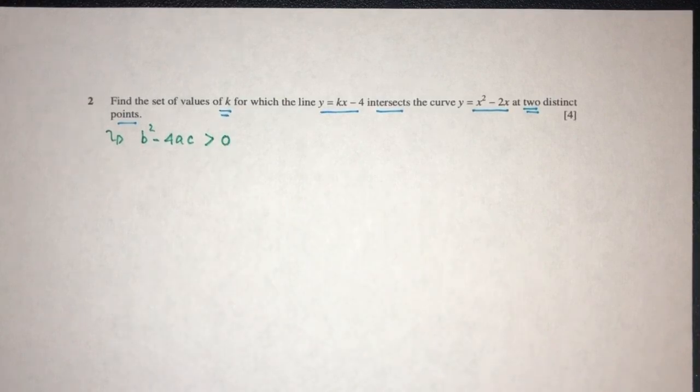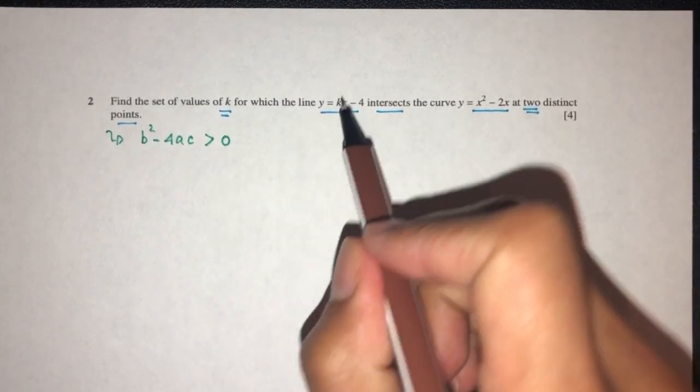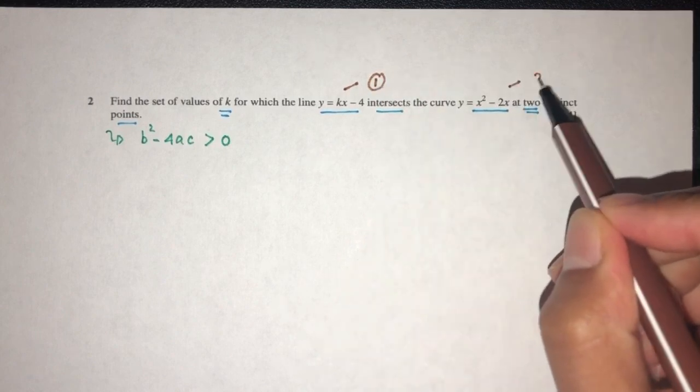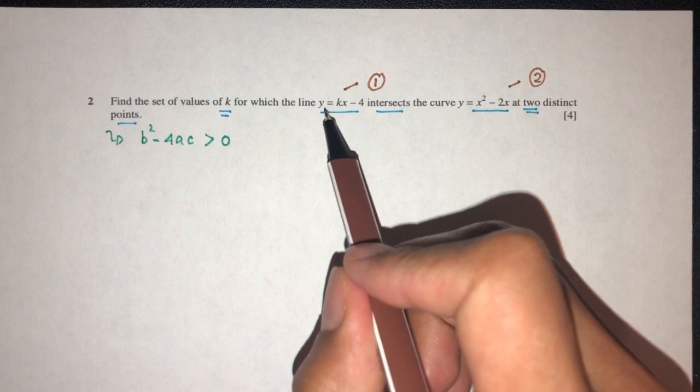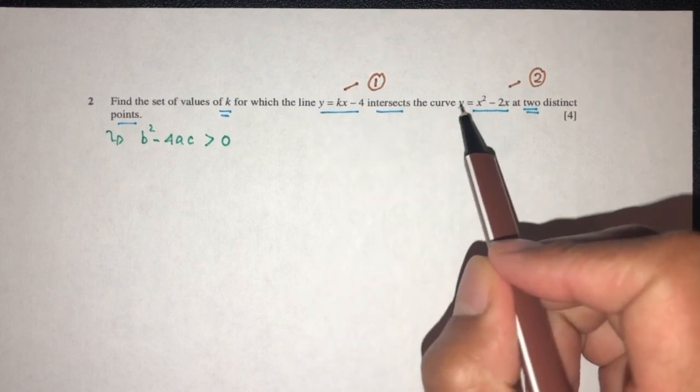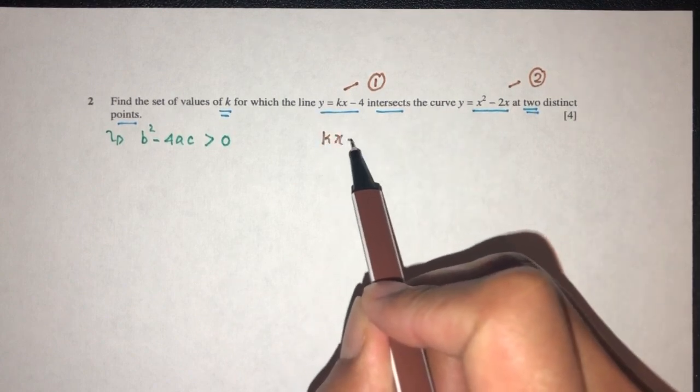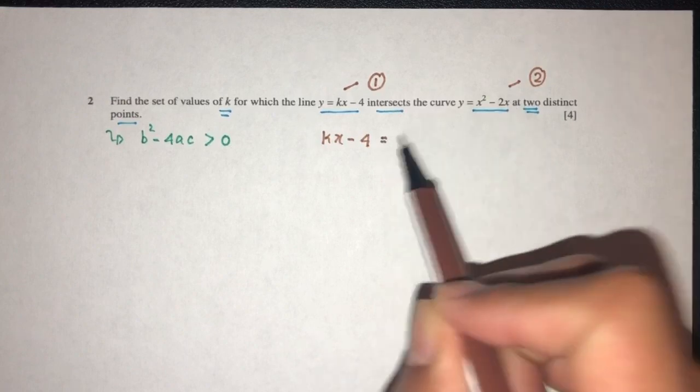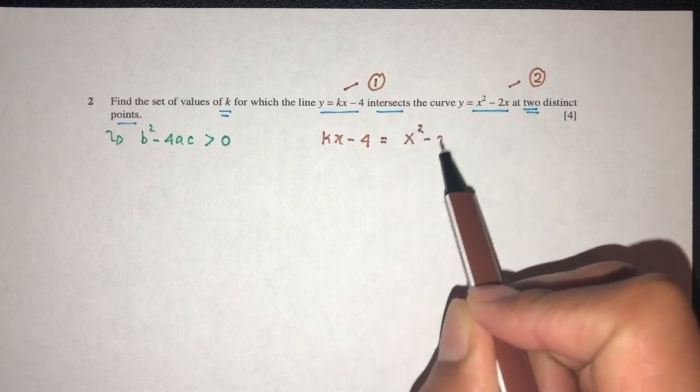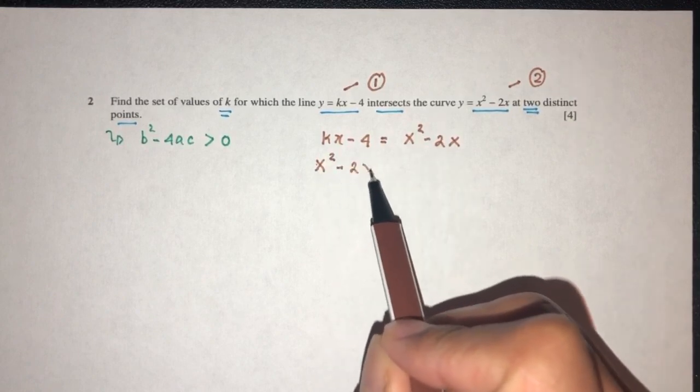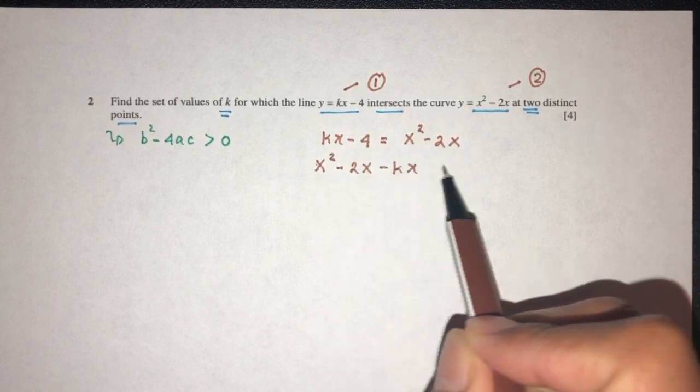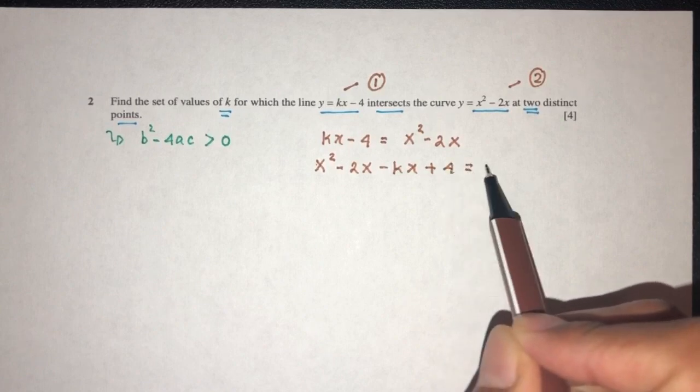Let's first solve these two equations. We have a line equation number one and the curve equation number two intersects, so we have to solve them simultaneously. Here we have y already. Replacing this y, you will have kx - 4 is equal to x² - 2x. Send everything to one side: x² - 2x - kx + 4 = 0.